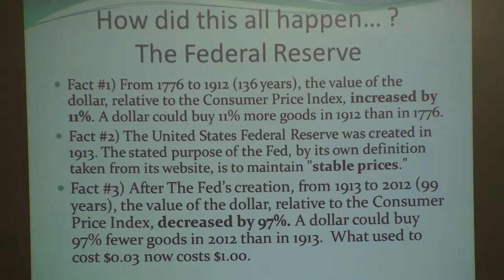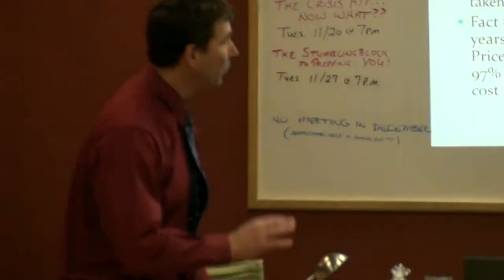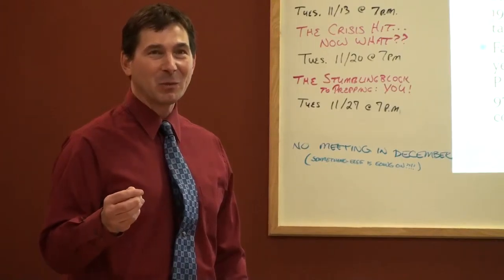Fact number three: what happened after 1913? In those 99 years, the consumer price index decreased by 97 percent. In other words, your dollar can only buy three percent of what it could in 1912. Go on for 136 years with no inflation, it turns on a dime in 1913 — just happens to be the year the Federal Reserve was created — and all of a sudden the amount of currency in circulation goes up and the value of the dollar goes way down. You lost 97 percent of purchasing power.